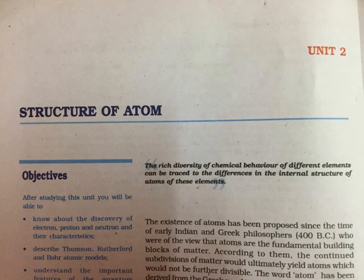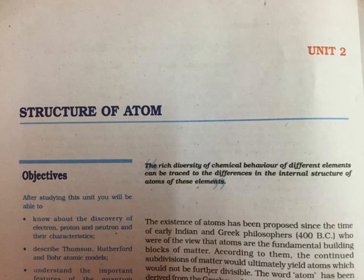According to classical theory, the energy content of the beam of light depends upon the brightness of the light. In other words, the number of electrons ejected and kinetic energy associated with them should depend on the brightness of light. It has been observed that though the number of electrons ejected does depend upon the brightness of light, the kinetic energy of the ejected electrons does not. For example, red light of any brightness may shine on a piece of potassium metal for hours but no photoelectrons are ejected. But even a very weak yellow light shining on the potassium metal causes the photoelectric effect to be observed. The threshold frequency for potassium metal is 5 × 10¹⁴ Hz.